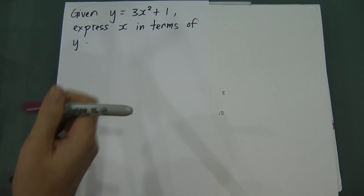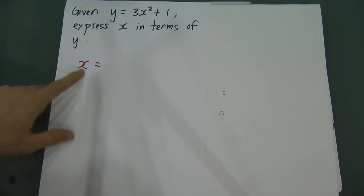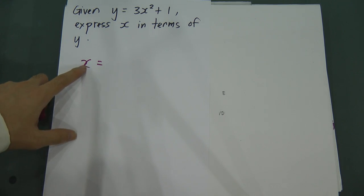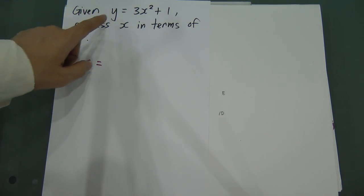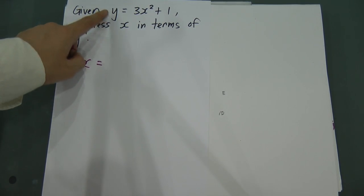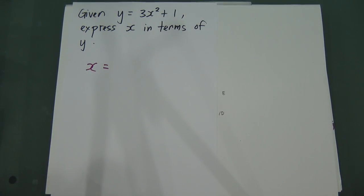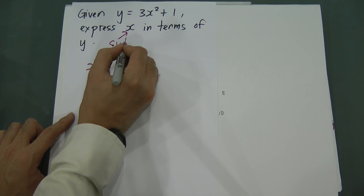When you make x as a subject, you will get x equal to something. That means here you can only have x — you cannot have 2x, you cannot have negative x. Your objective is to make the whole equation leave only x on one side. 'x in terms of y' means the other side can have numbers and y.